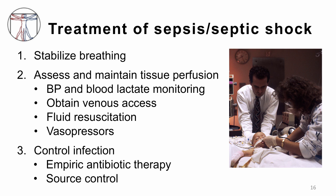If a patient has sepsis or septic shock, first stabilize their breathing — ensuring oxygenation and CO2 clearance. Assess and maintain tissue perfusion by monitoring blood pressure and drawing blood lactate levels. Place an IV or central line to give intravenous fluids to fill leaky blood vessels. If hypotension persists, give vasopressors to tighten blood vessels, though these carry their own risks. At the same time, identify and control the infection: give early broad-spectrum antibiotic therapy based on the suspected infection type, and perform source control — for example, draining a large abscess.